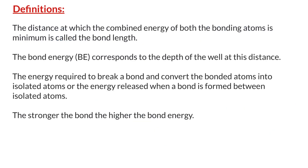Here are some definitions. The distance at which the combined energy of both the bonding atoms is minimum is called the bond length. The bond energy corresponds to the depth of the well at this distance. It is defined as the energy required to break a bond and convert the bonded atoms into isolated atoms, or the energy released when a bond is formed between isolated atoms. The stronger the bond, the higher is the bond energy.